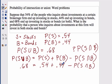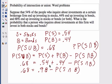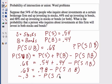Treating it like a regular equation, I add .54 and .44 together to get .98, then subtract .98 from .68, which gives me negative .3 equals negative probability of the intersection. Dividing both sides by negative one gives me a positive .3, and that's the answer.